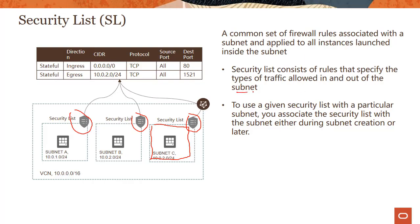Second thing to note is the rules themselves — all three security lists here have the same rule, but they can be different rules. It basically says: ingress, meaning incoming traffic, allowing all traffic to come in at port 80; and egress, meaning outgoing traffic, allowing traffic to this particular subnet only on port 1521. This is a sample entry and your situation would differ depending on your requirements.